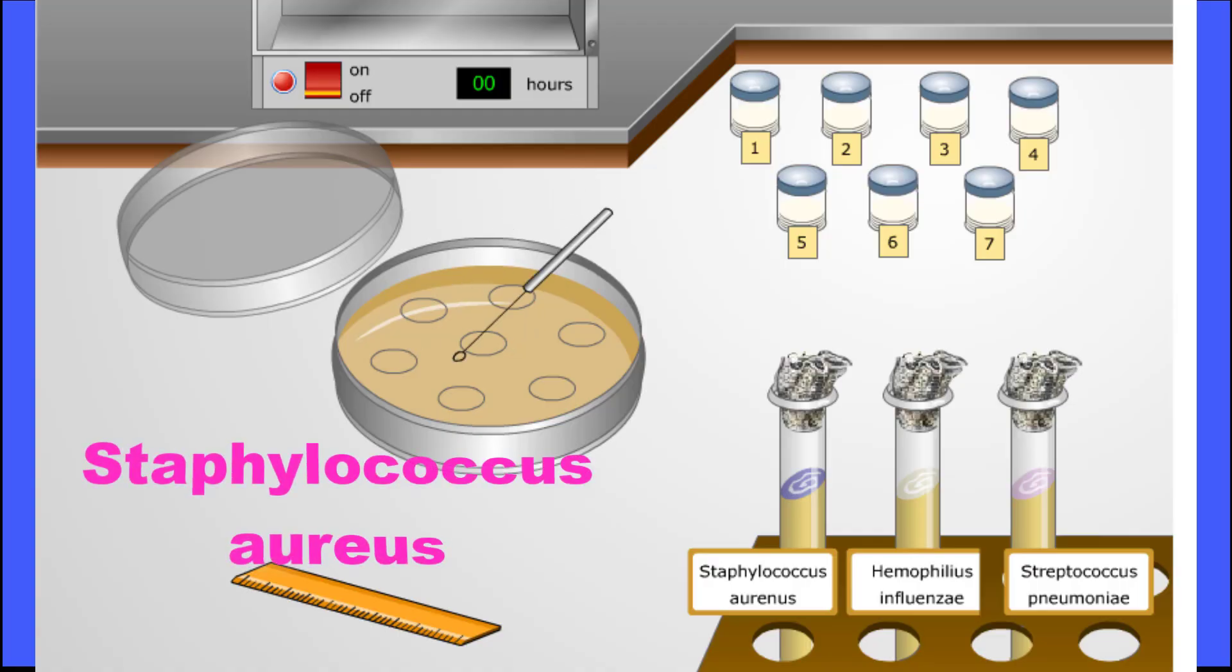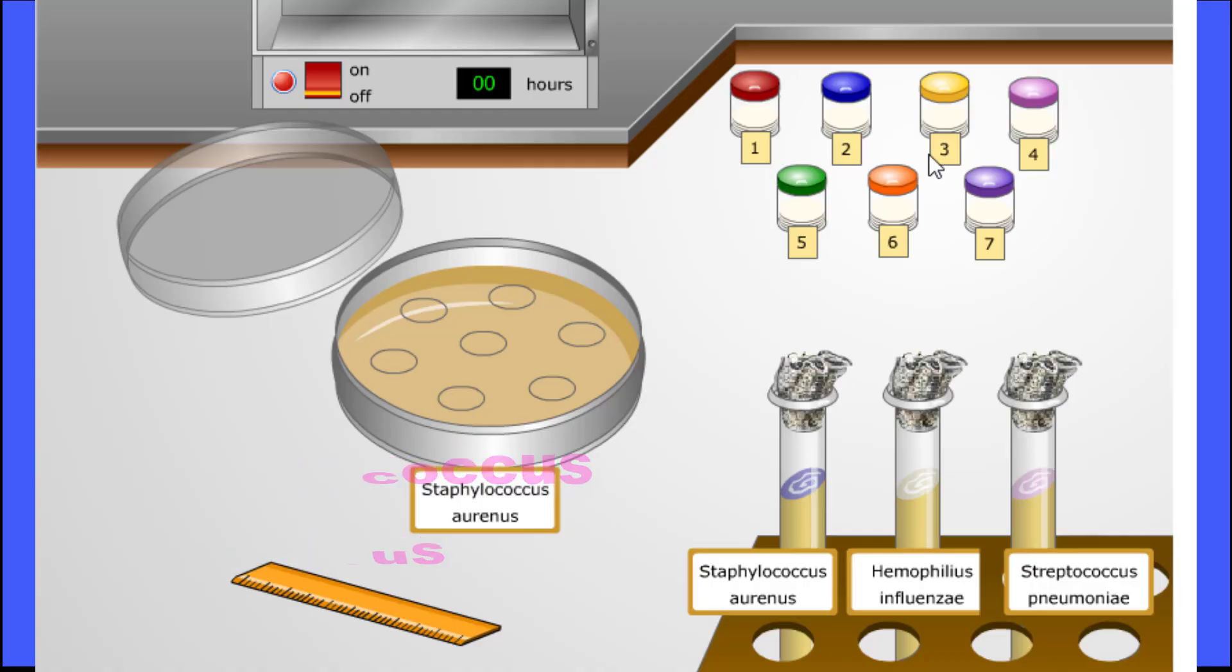Let's start with Staphylococcus aureus. We will begin by inoculating the agar on our petri dish. You'll want to make sure that the entire petri dish is covered with Staphylococcus aureus.